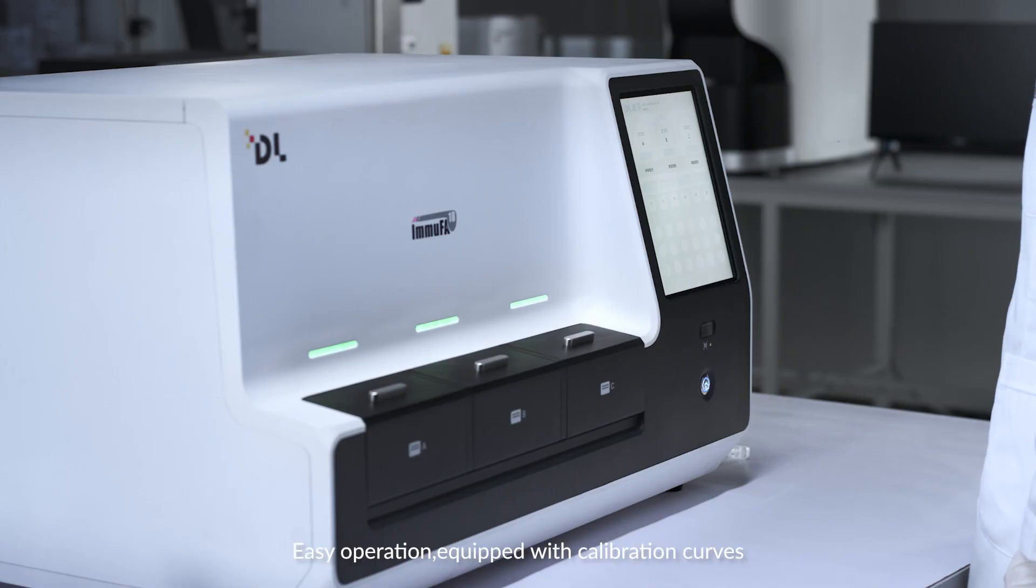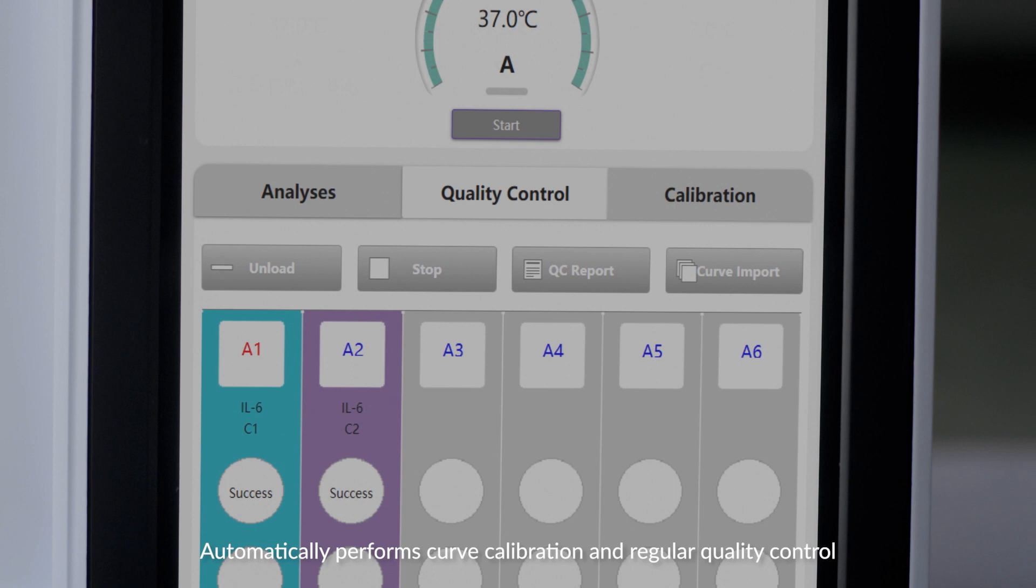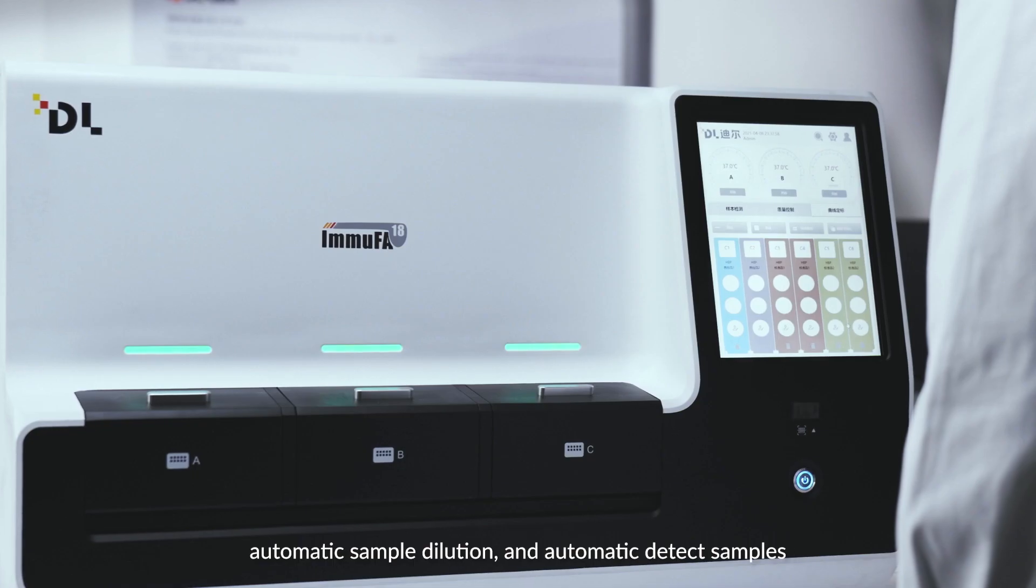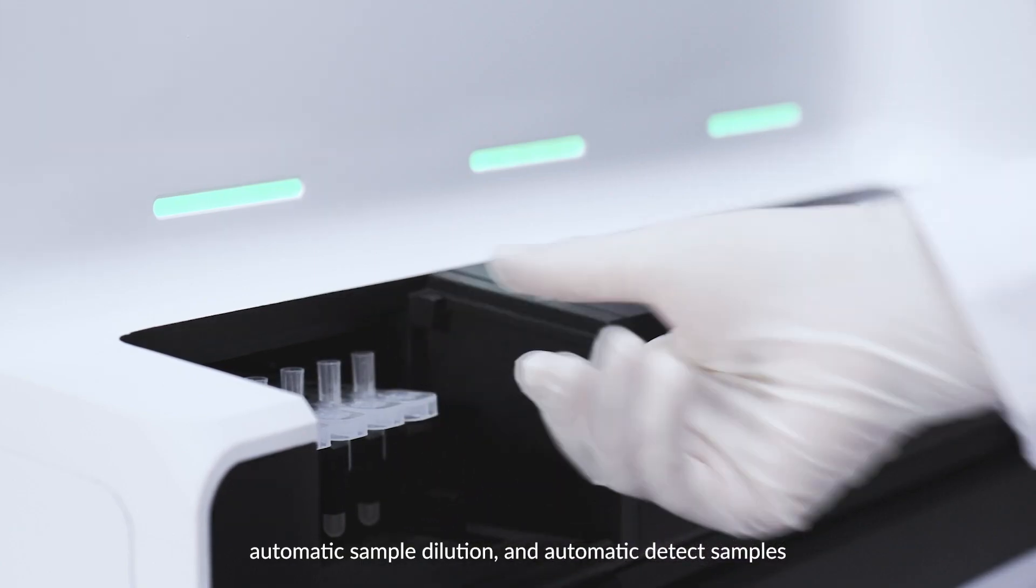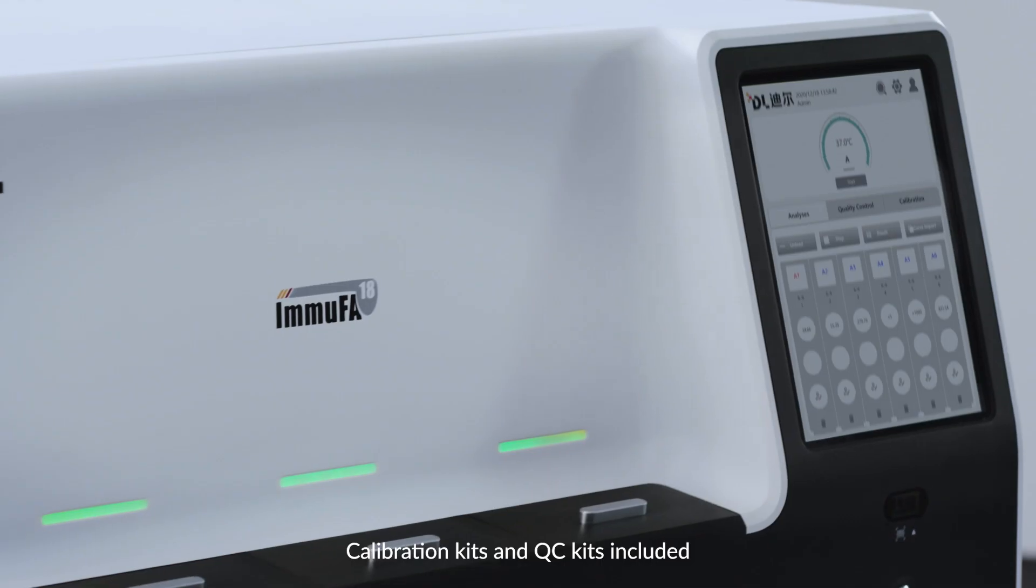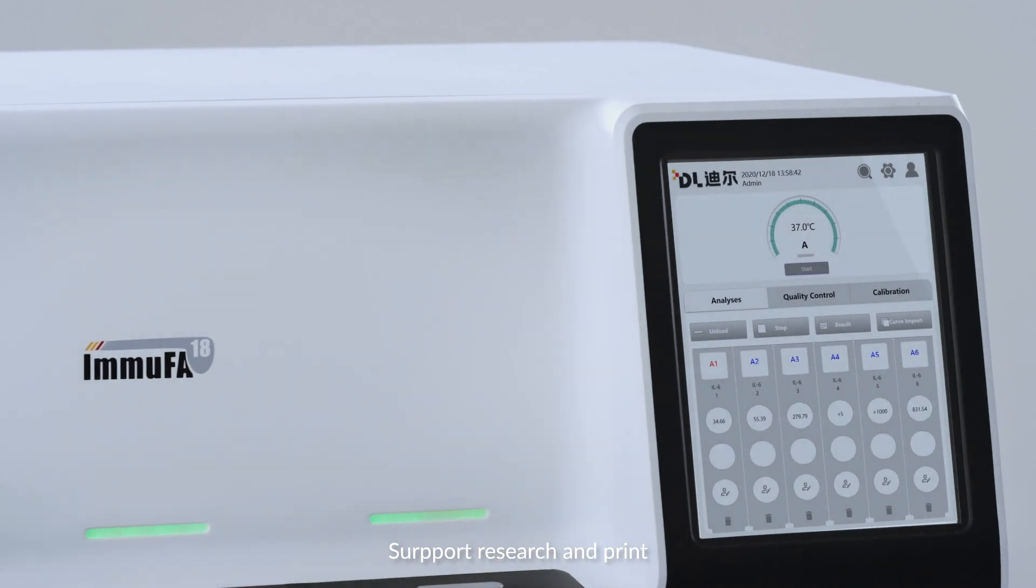The instrument is easy to operate. Equipped with calibration curves, it can automatically perform curve calibration and regular quantity control, and also automatically do sample dilution and detect samples. The calibration kits and QC kits are included in the reagent package. It also supports result researching and printing.